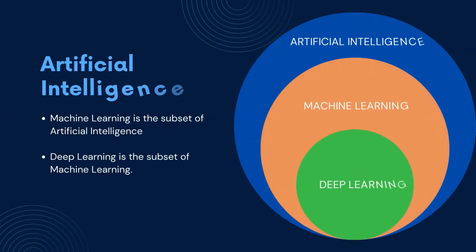First of all, if I have to answer all those things in one single sentence, I will simply say: machine learning is the subset of artificial intelligence, and deep learning is the subset of machine learning.